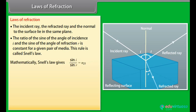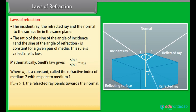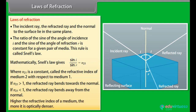Laws of refraction: The incident ray, the refracted ray, and the normal to the surface lie in the same plane. The ratio of the sine of the angle of incidence to the sine of the angle of refraction is constant for a given pair of media — this is Snell's Law: sin i / sin r = n21, where n21 is the refractive index of medium 2 with respect to medium 1. If n21 > 1, the refracted ray bends towards the normal; if n21 < 1, it bends away. A higher refractive index means the medium is optically denser.